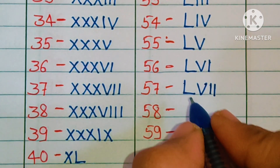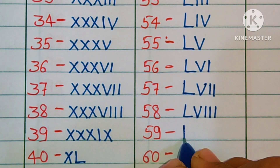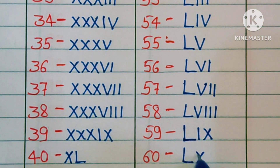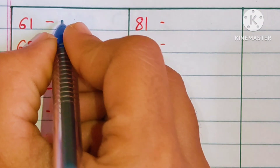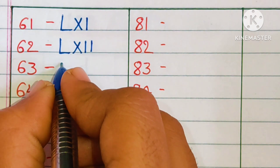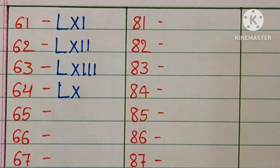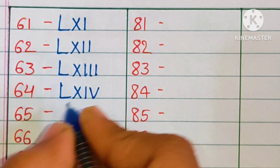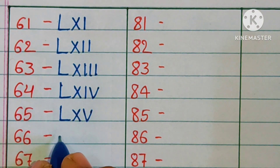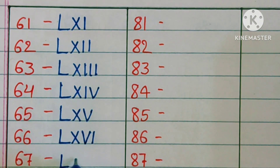48: XLVIII. 49: XLIX. 50: L. 51: LI. 52: LII. 53: LIII. 54: LIV. 55: LV. 56: LVI. 57: LVII. 58: LVIII. 59: LIX. 60: LX.